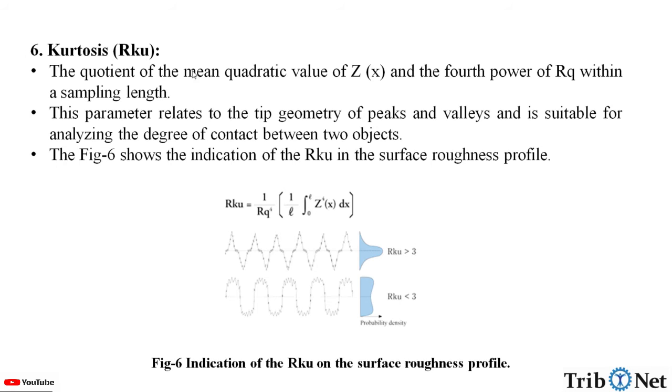The next factor is kurtosis, which is represented by RKU. This is the quotient of the mean quadratic value of Z of x and the fourth power of Rq within the sampling length. This parameter relates to the tip geometry of peaks and valleys and is suitable for analyzing the degree of contact between two objects. Here in figure 6, which shows the indication of RKU in the surface roughness profile.